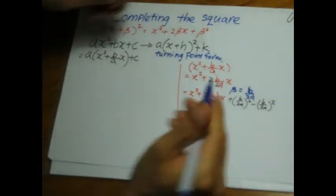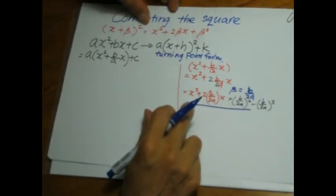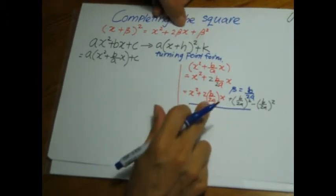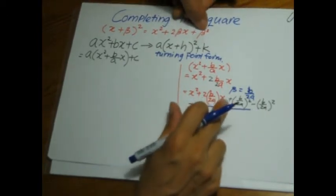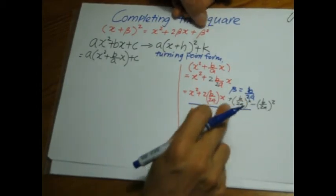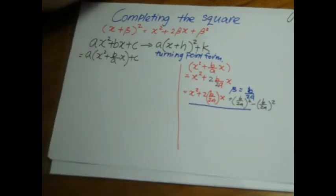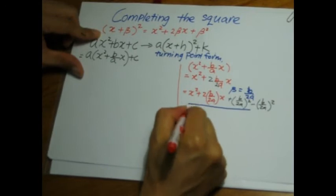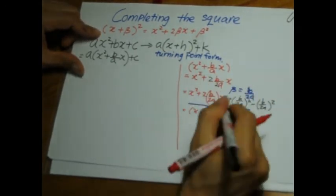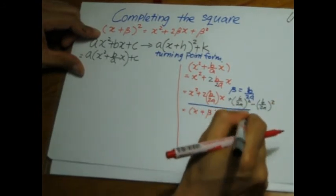Now what does that buy me? Well, if you pay attention to the first three terms, this is x squared, this is 2 times beta x, b over 2a is my beta now, plus b over 2a that's the beta, and beta squared. So these three terms, the first three terms, can now be written as x plus beta everything squared, and then I have minus the last term, which is b over 2a everything squared.